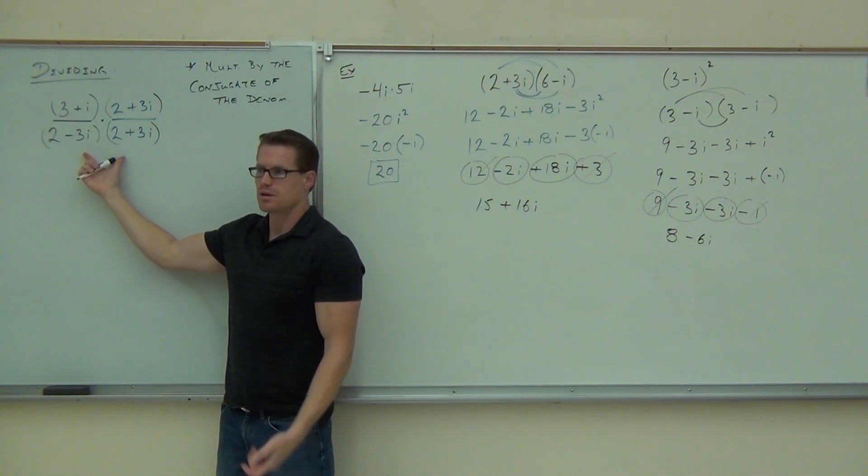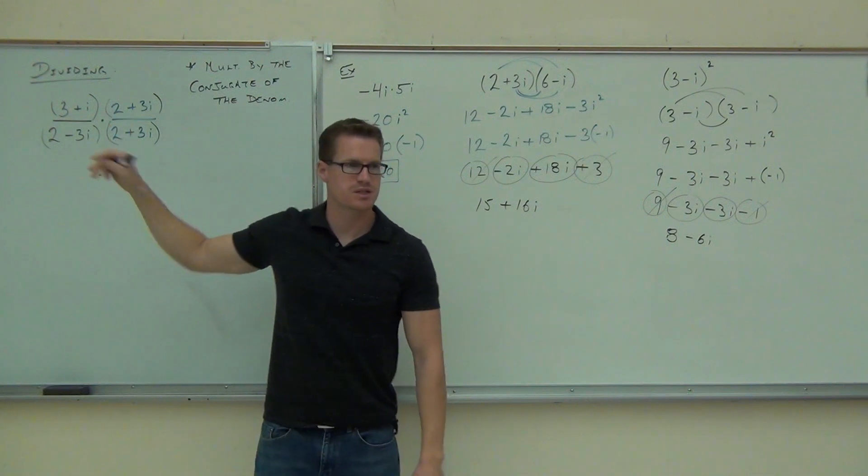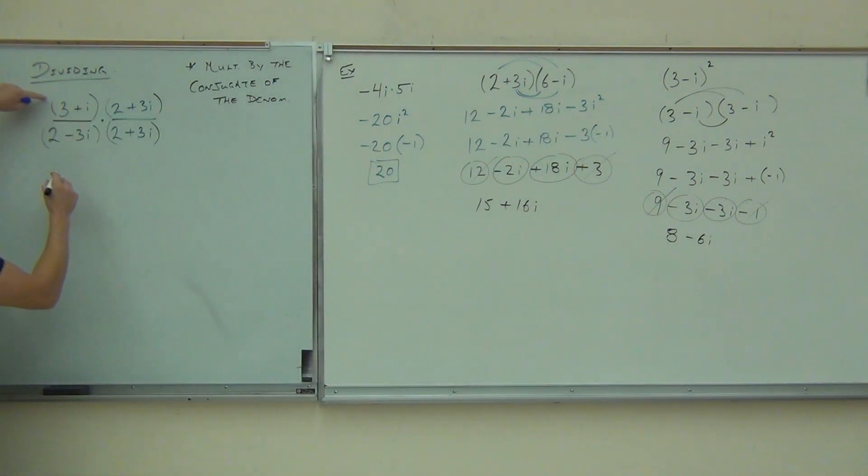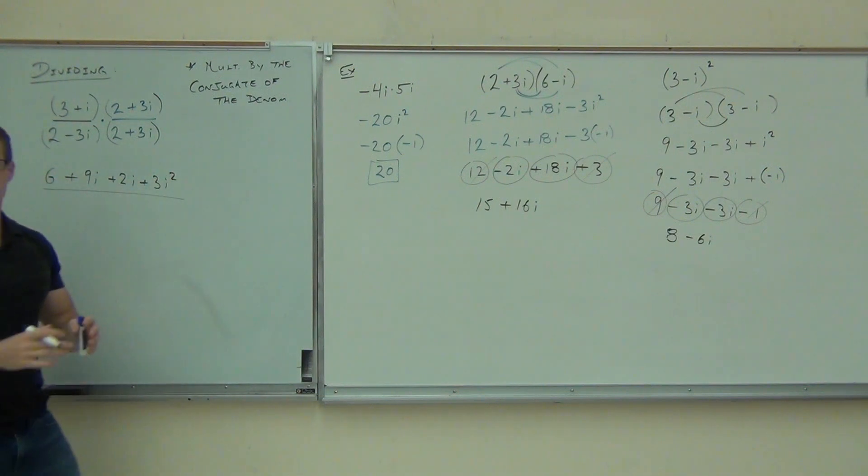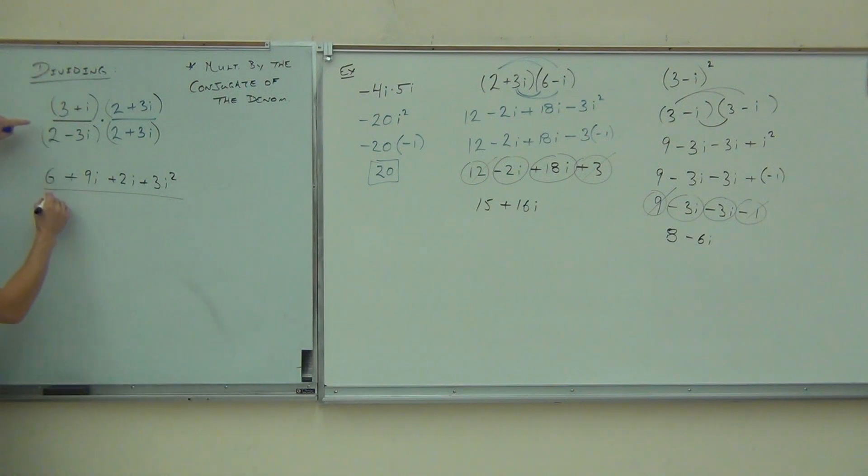Yeah, they're conjugates. That's what I just showed you over here on the previous example. So when we distribute, well, we're going to kind of do this quickly since we should have the hang of it at this point. We're going to get 6 plus 9i plus 2i plus 3i squared. We're just distributing, we're foiling that out. On the denominator, we're going to get 4 plus 6i minus...